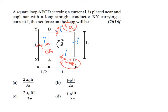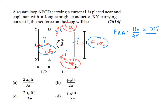For sides AB and CD: side AB carries current in the same direction as the straight conductor, so it is attracted. Side CD carries current in the opposite direction, so it is repelled. We need to subtract the forces F_AB and F_CD since they act in opposite directions.